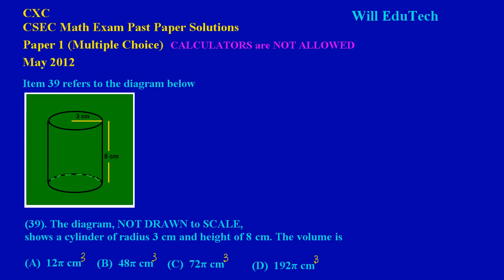In question 39, it states that item 39 refers to the diagram below. Here we have a cylinder, and they gave us the height which is 8 centimeters and the radius which is 3 centimeters. The diagram, not drawn to scale, shows a cylinder of radius 3 centimeters and height of 8 centimeters. They're asking us to calculate the volume of the cylinder. Here they have given us some options A, B, C, and D.